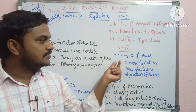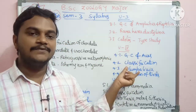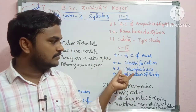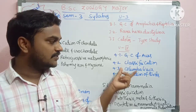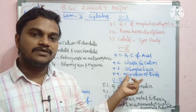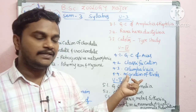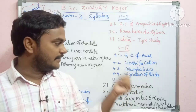Unit 4 covers general characters of Aves and their classification. The type study is Columba (pigeon). Sub-topic 4.4 covers migration of birds, and there is a dedicated sub-topic video for this.